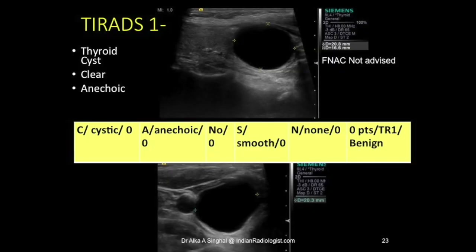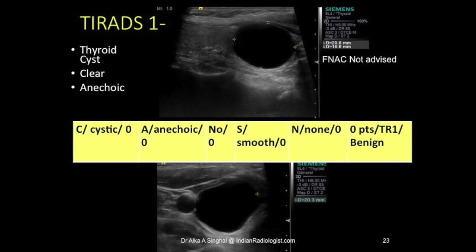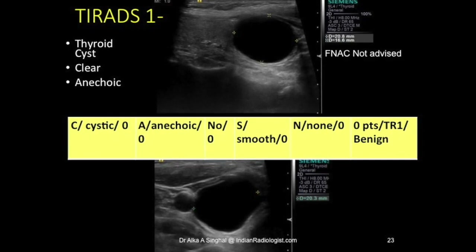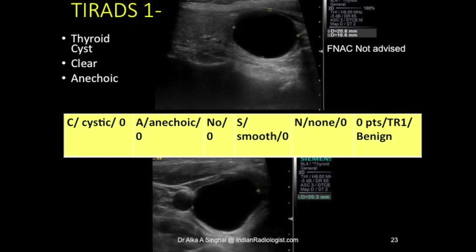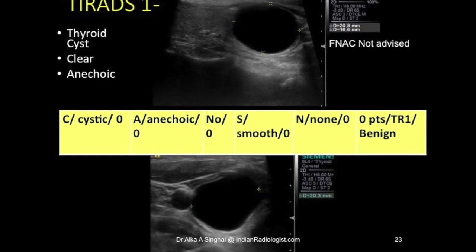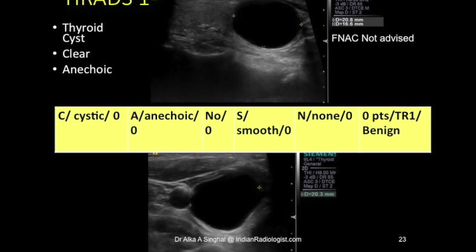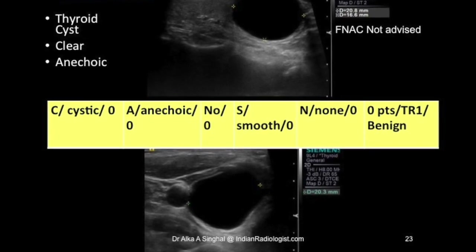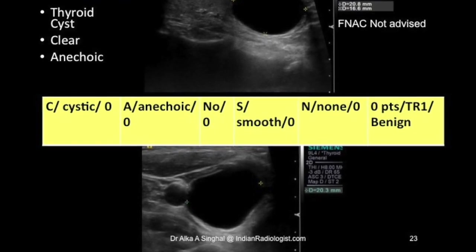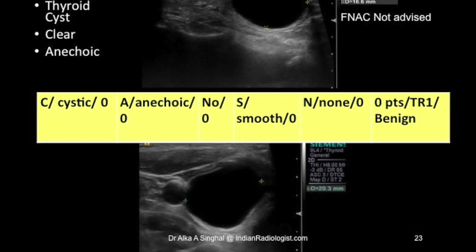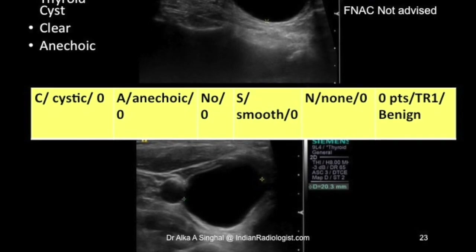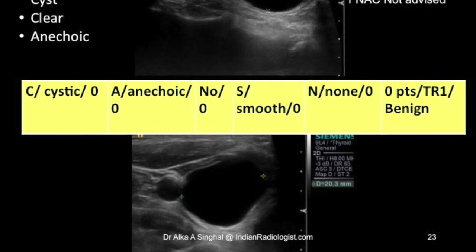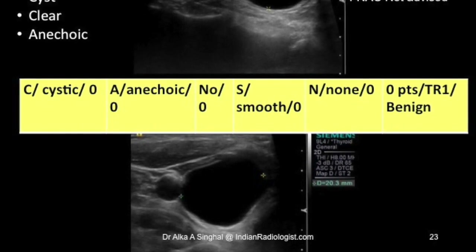First case: TI-RADS 1. We have a clearly well-defined anechoic cystic nodule. For composition: cystic — zero. Echogenicity: anechoic — zero. Not taller than wide — no. Margins: smooth — zero. No calcifications — zero. Total score: TR1, benign nodule; FNA is not advised.